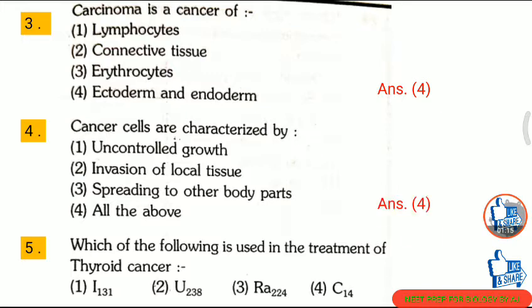Question 4: Cancer cells are characterized by — first, uncontrolled growth; second, invasion of local tissue; third, spreading to other body parts; fourth, all of the above. The correct answer is option 4: all of the above.